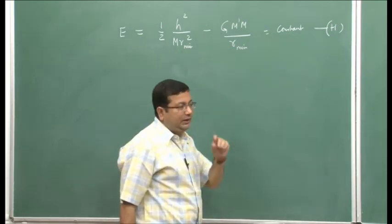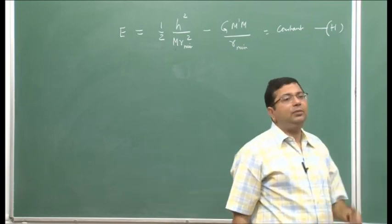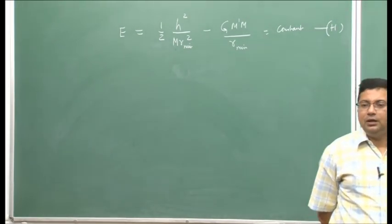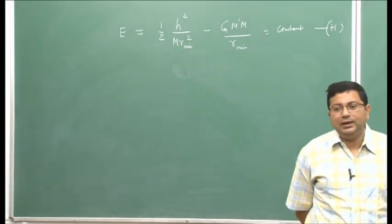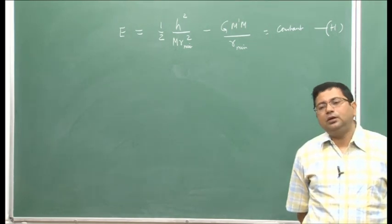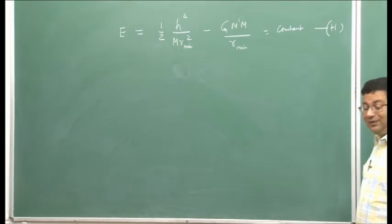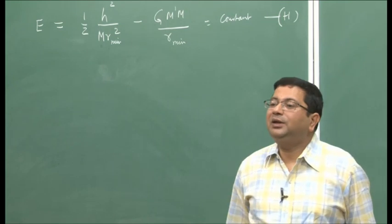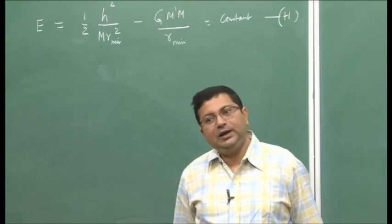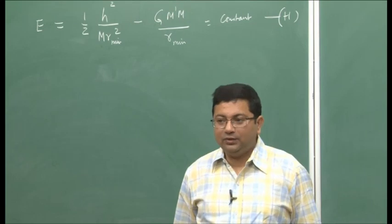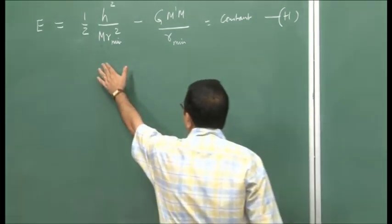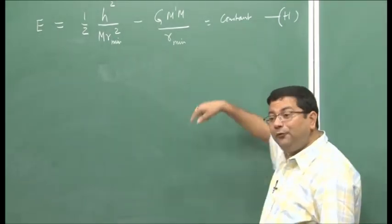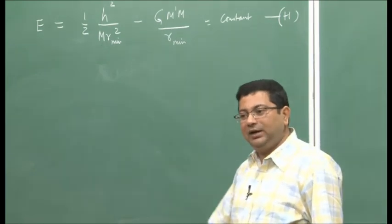The first term came from the kinetic energy and the second from the potential energy, where G is the universal constant, M-dash is the mass of the heavenly body, and m is the mass of the vehicle. Since in orbital mechanics we consider thrust given impulsively, after that there is no thrust — the vehicle moves purely due to gravitational force. So with zero thrust, no net energy is added, and the total energy remains constant everywhere in the orbit.